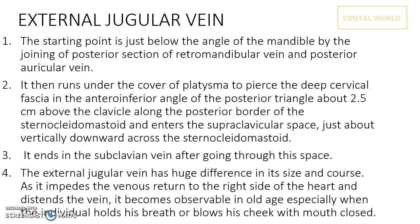The EJV enters the posterior triangle about 2.5 cm above the clavicle. At this point it pierces the deep cervical fascia. It ends in the subclavian vein — that is, it joins the subclavian vein after going through the space.